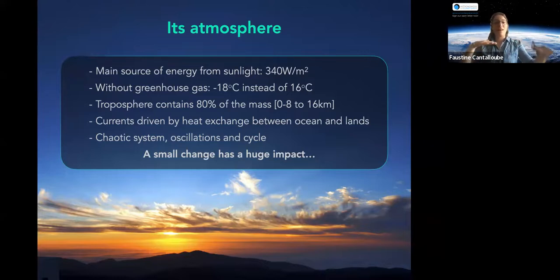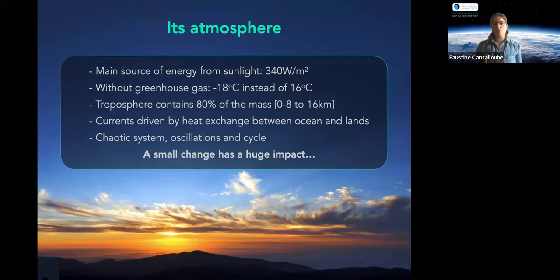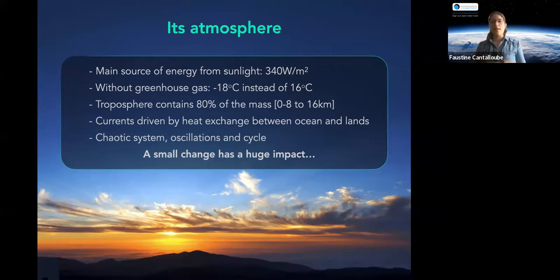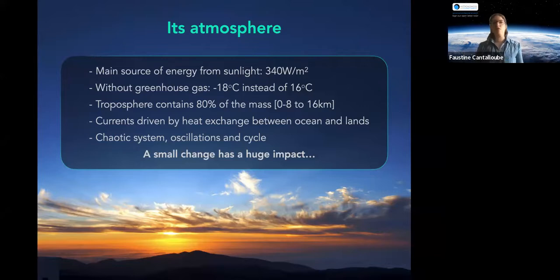Clouds and weather events all happen in the troposphere. Currents are driven by heat exchange between ocean and land — they don't have the same thermal coefficient — and also by the Earth's rotation, so with the Coriolis force everything goes around, and at the end of the day you have a chaotic system. The global climate is driven by oscillations and cycles, and because it's chaotic, a small change can have a huge impact.